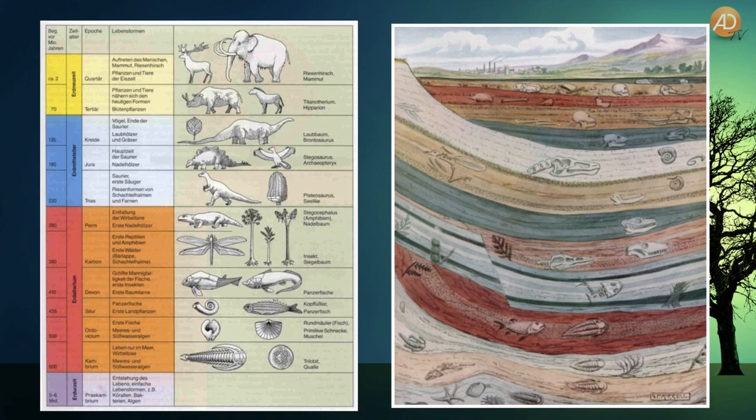Auf der rechten Seite sehen wir, wie so etwas aussehen kann, wenn man solche Schichten aufgräbt. Also auch hier unten die Meeresbewohner, darüber dann die Amphibien, die Reptilien mit den Dinosauriern mittendrin und ganz oben dann die Säugetiere. Wir finden sie auch überwiegend genauso sortiert – nicht immer, es kann mal sein, dass eine Ziege zwischen den Dinosauriern liegt, aber meistens sieht das große Bild so aus.